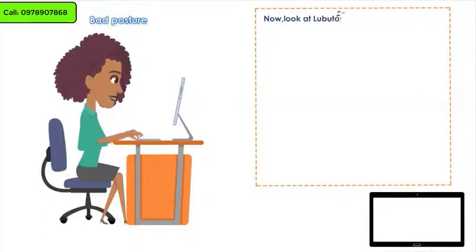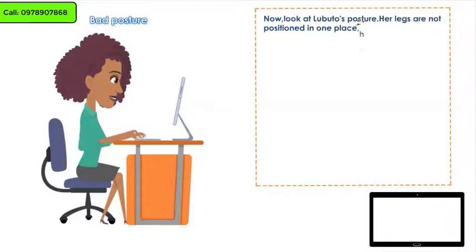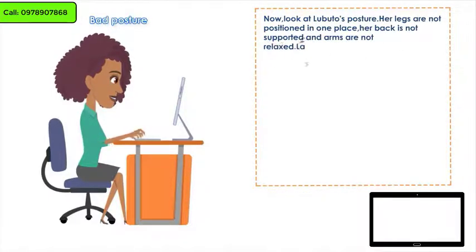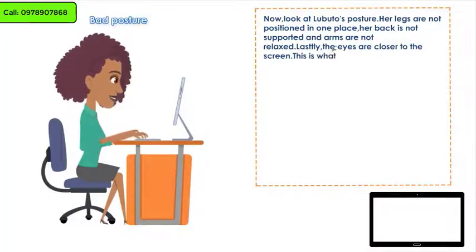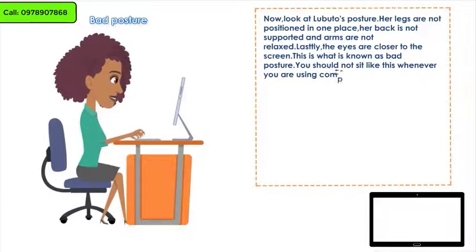Now, look at Lubuto's posture. Her legs are not positioned in one place, her back is not supported, and her arms are not relaxed. Lastly, her eyes are closer to the screen. This is what is known as bad posture. You should not sit like this whenever you are using computers.